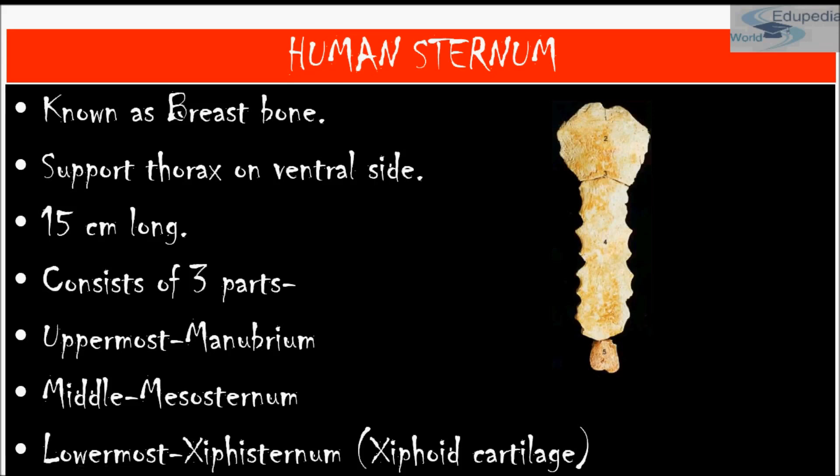That was all about the human axial skeleton — an overview and summary of what was covered in detail in the previous sections. In the next section of the presentation, we will be studying about the human appendicular skeleton. Stay tuned and keep watching Wikipedia World Videos.